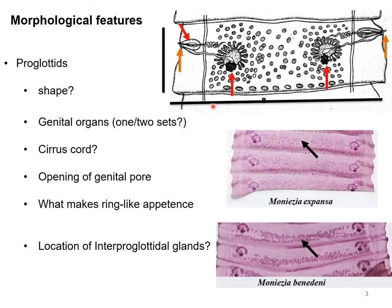The shape of the mature proglottid is almost rectangular and it is broader than long. If you look closely at the picture, you can see one set of genital organs located on one side and another set of genital organs on the other side — two sets of genital organs in each mature proglottid. As there are two sets, there are two genital openings, which is why this parasite is also known as double-pored.